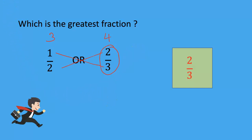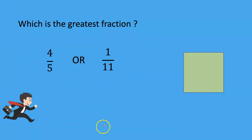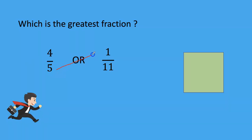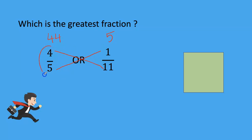Let us see another example. Which is the greatest fraction: 4 divided by 5 or 1 divided by 11? We know the method — cross multiply. 4 into 11 is 44, and 5 into 1 is 5. Which is the bigger number? 44. So the greatest fraction is 4 by 5.